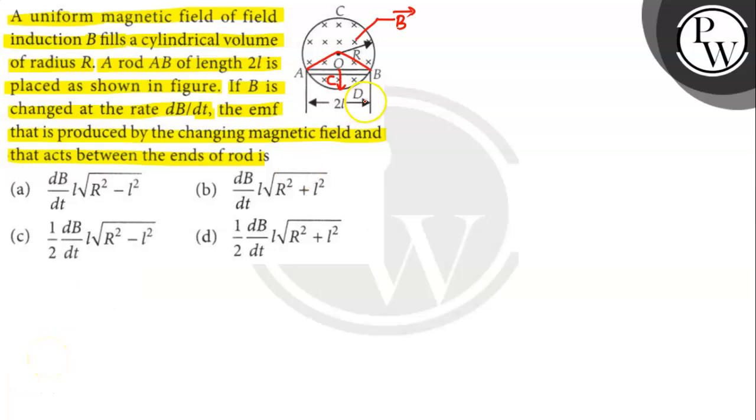So EMF induced between the ends of the rod epsilon is equal to A dot dB/dt, where A is the area of the triangle, triangular AOB.